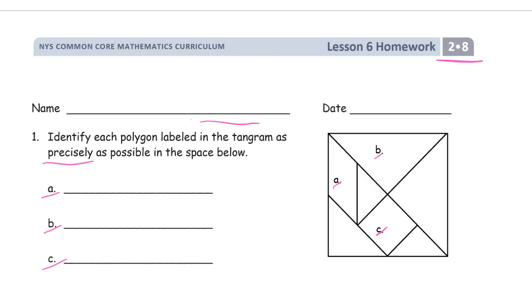For shape A, looking at this shape, those sides are parallel and these sides are also parallel to each other, so that's a parallelogram.